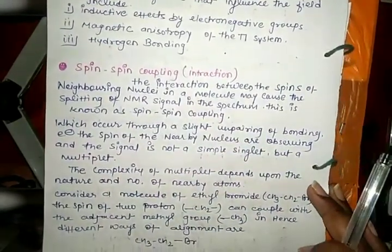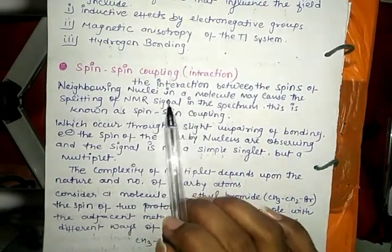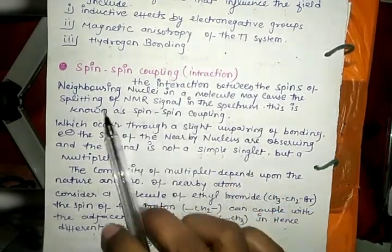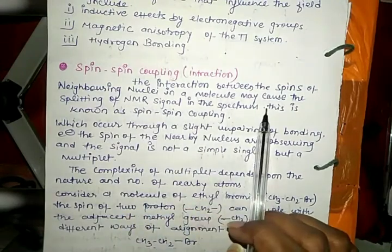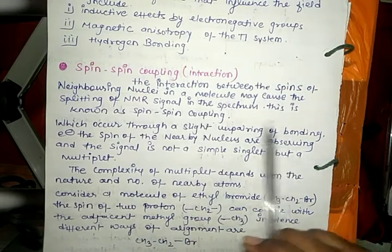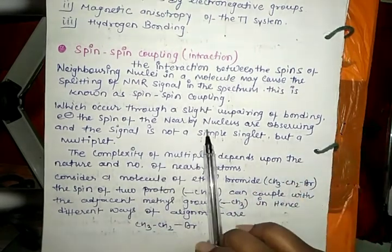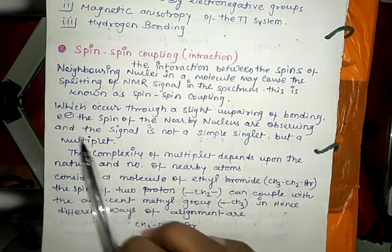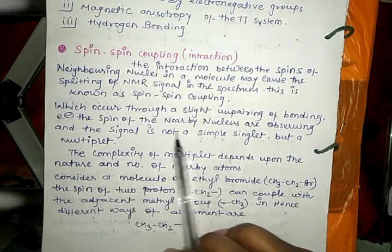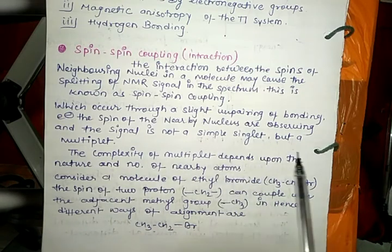Next we see spin-spin coupling or spin-spin interaction. The interaction between the spins of neighboring nuclei in a molecule may cause the splitting of NMR signal in the spectrum. This is known as spin-spin coupling, which occurs through a slight unpairing of bonding electrons.